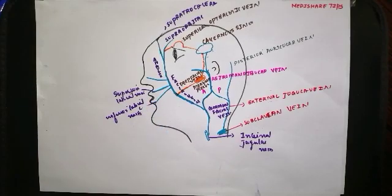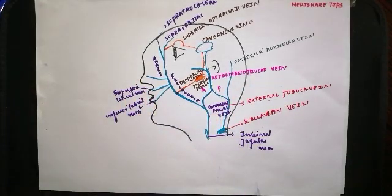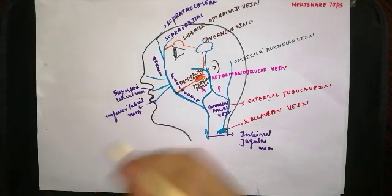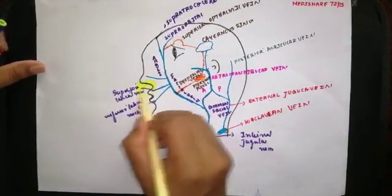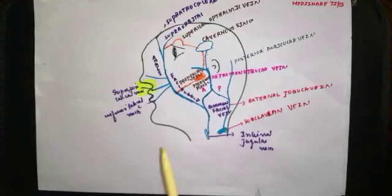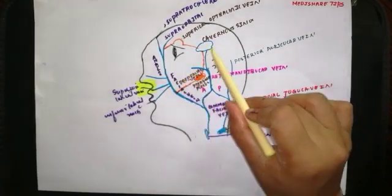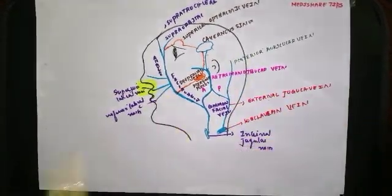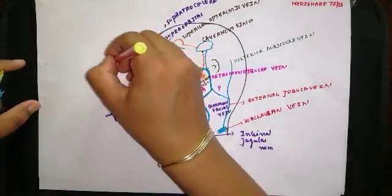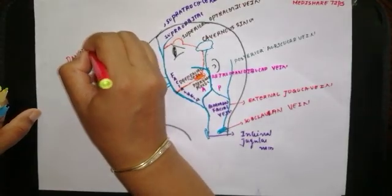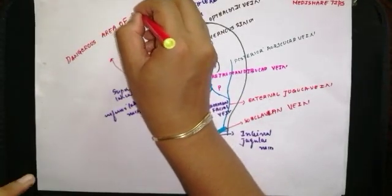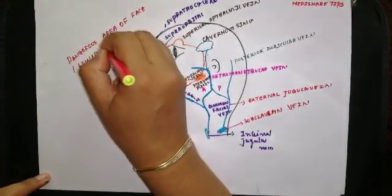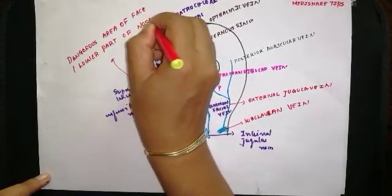The area of the face which can carry infection into the cavernous sinus is called the dangerous area of the face. This is the lower part of the nose and the upper lip. When this area is infected, it can carry infected emboli by means of these valveless veins into the cavernous sinus and can lead to cavernous sinus thrombosis.